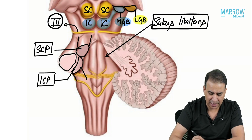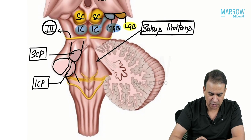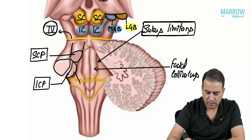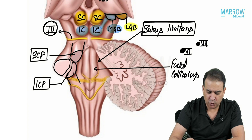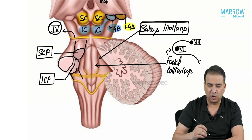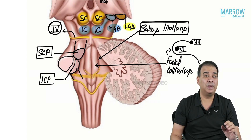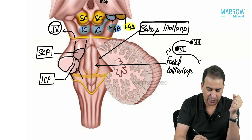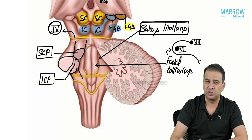The most prominent elevation in the floor of the fourth ventricle is the facial colliculus — also a very important exam question. The facial colliculus is formed because the sixth nucleus lies deep to it, and the facial nerve makes an internal genu in the pons, wrapping around the sixth nucleus. This bulge created by the facial nerve fibers surrounding the sixth nucleus is called the facial colliculus.